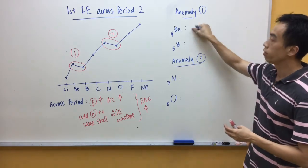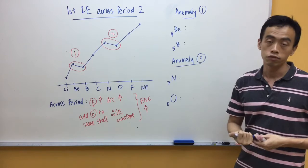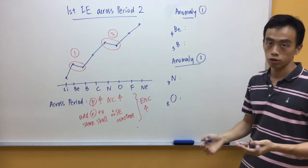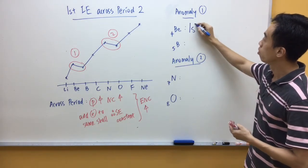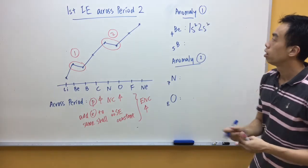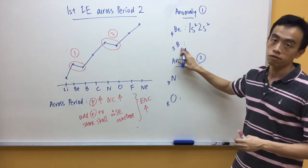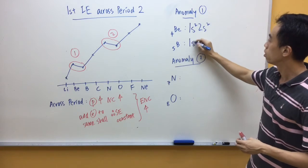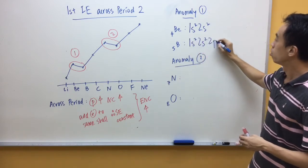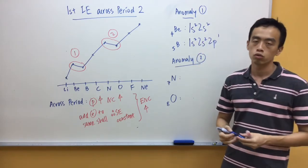Now, if I look at the first anomaly between beryllium and boron, if I write out the electronic configuration for beryllium, then 4 electrons would just be 1s2, 2s2, boron has 5 electrons, 1s2, 2s2, 2p1.